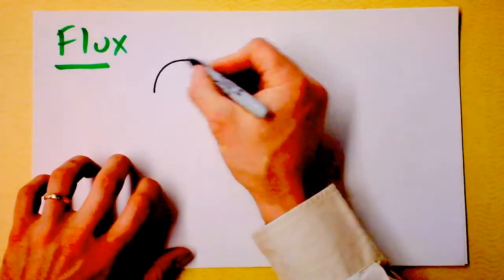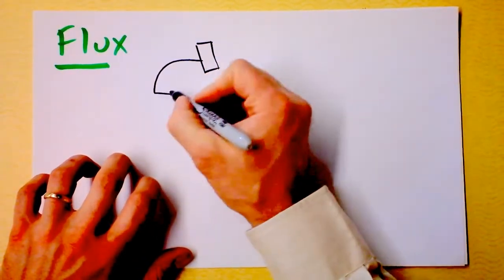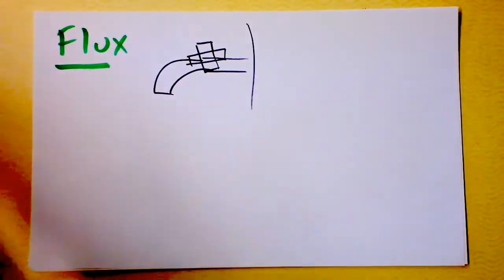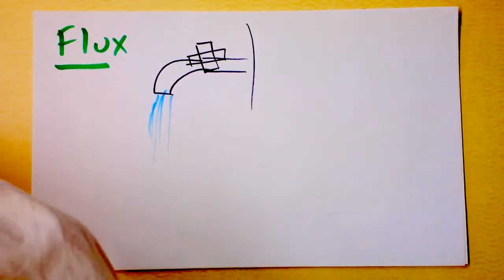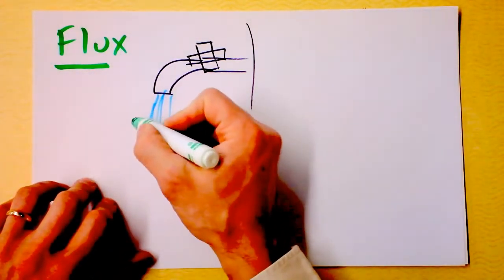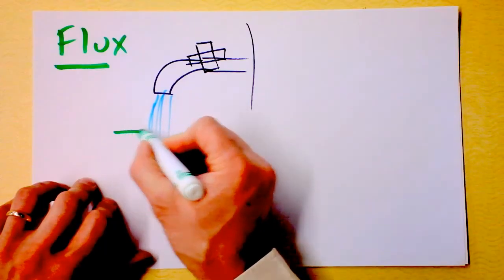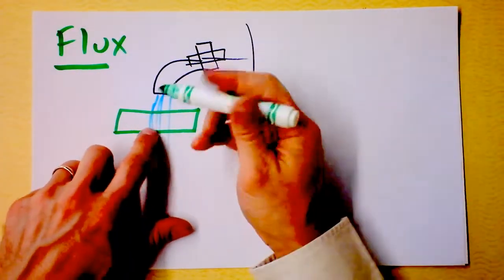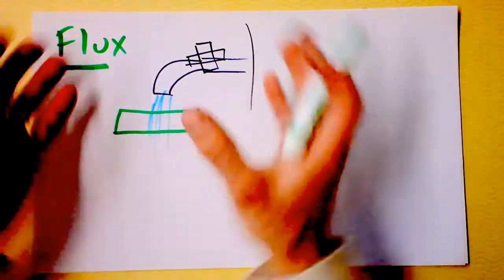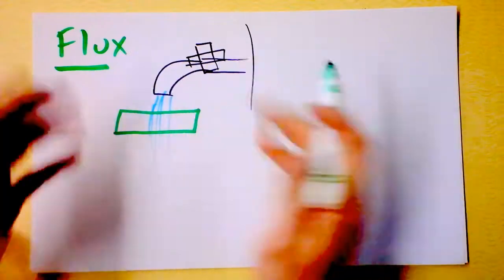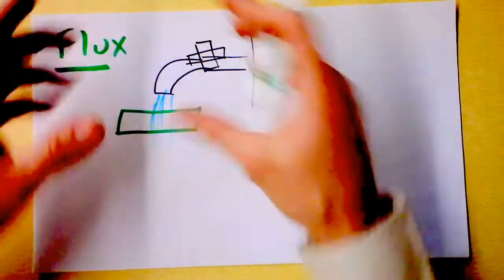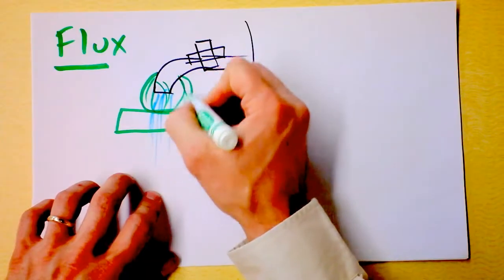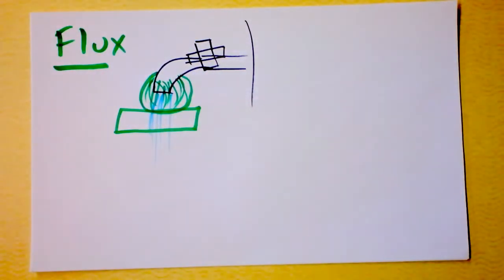If you have a faucet with water coming out of it, you could put your flux catcher right here in this stream of water. If you orient it flat — meaning in this direction — you would catch a lot of flux coming out. You could even wrap it around the faucet and say there was positive flux coming out of the flux catcher, wrapping it to make a solid surface.